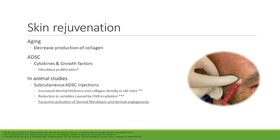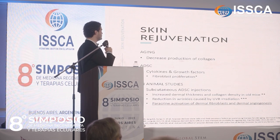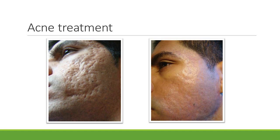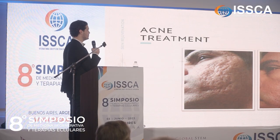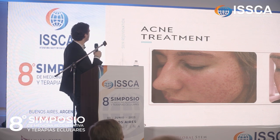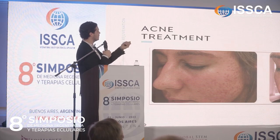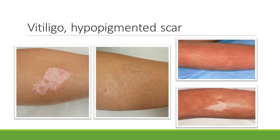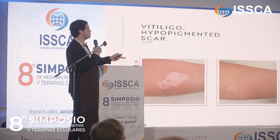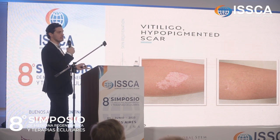We can also use stem cells for skin rejuvenation. With aging there is decreased collagen production. By using ADSCs we can increase fibroblast proliferation for anti-aging purposes. This is a patient after acne treatment — I did carbon dioxide laser and two sessions of stem cells with good results. This is another patient where I did one session of stem cells, shown three months after the procedure. We can also use stem cells in treatment of vitiligo and hypopigmented scars, combining phototherapy with stem cell treatment.